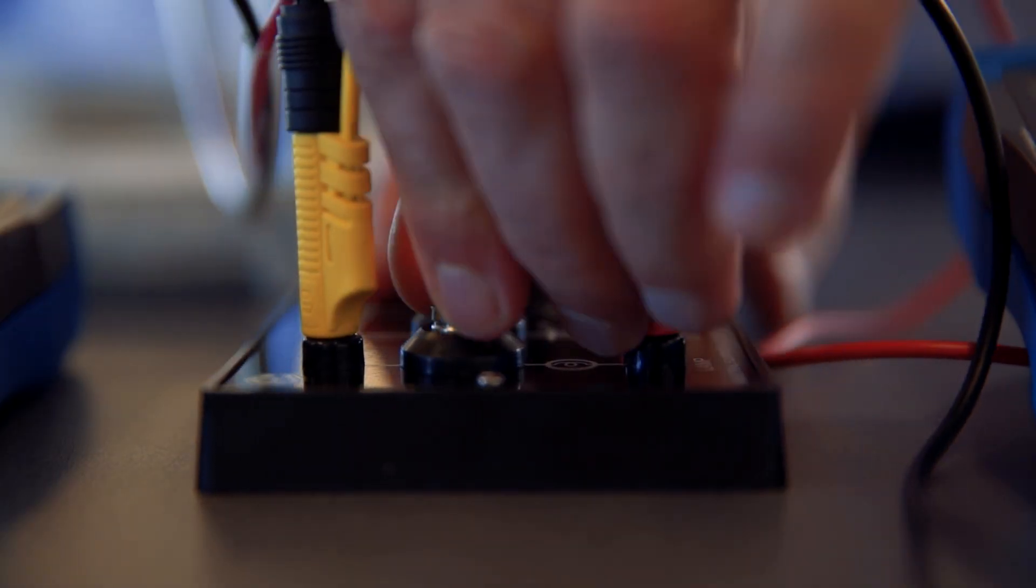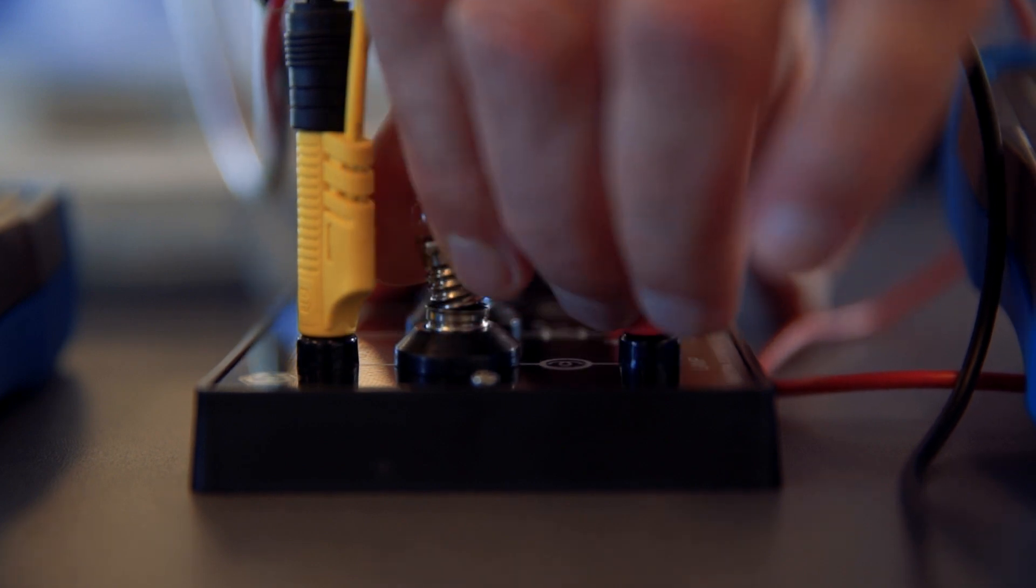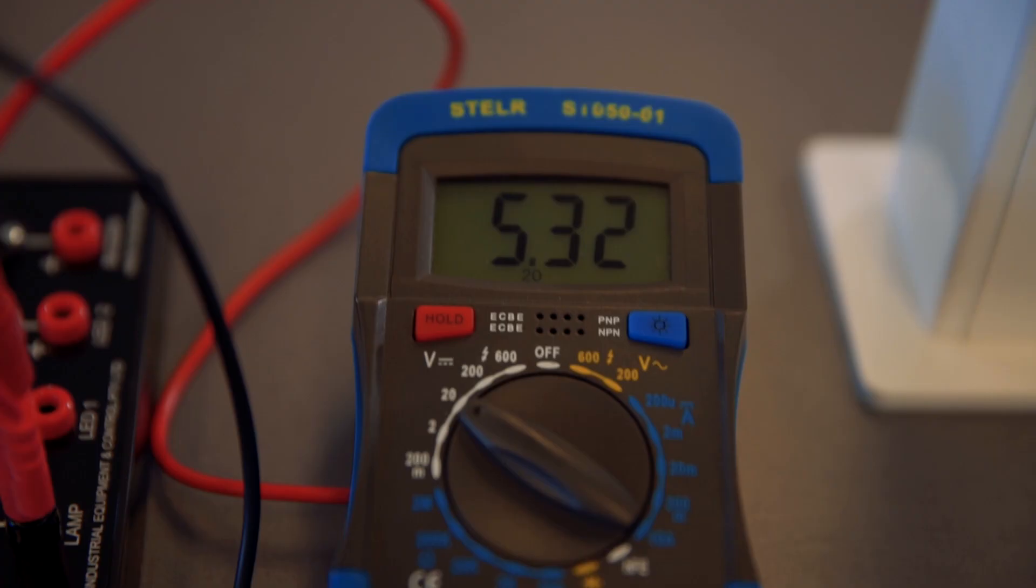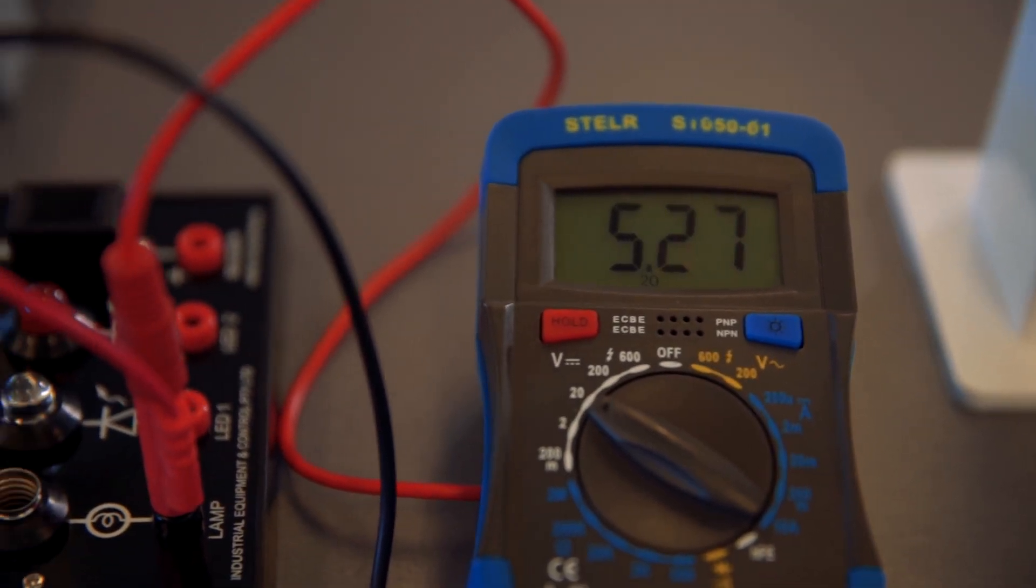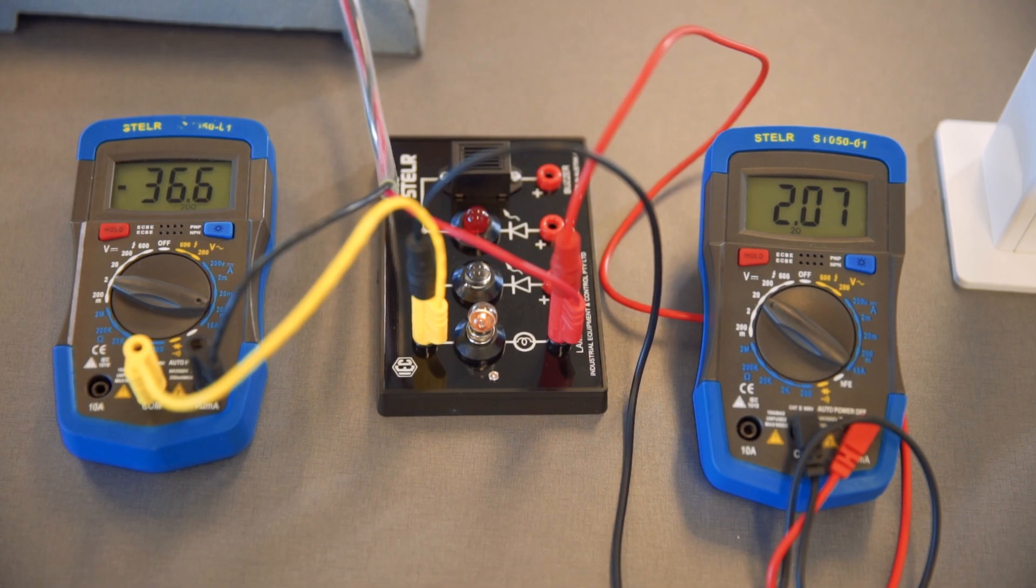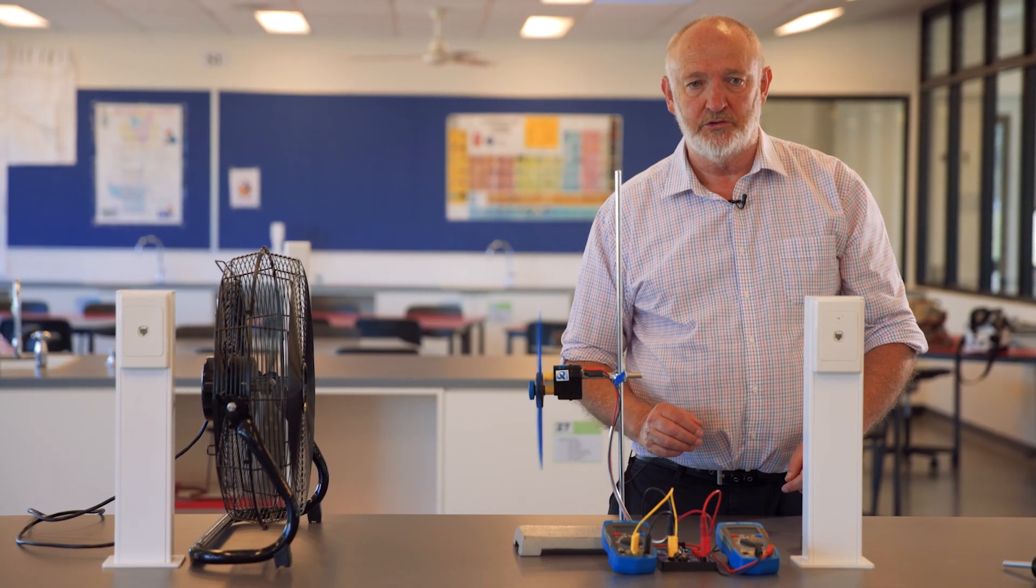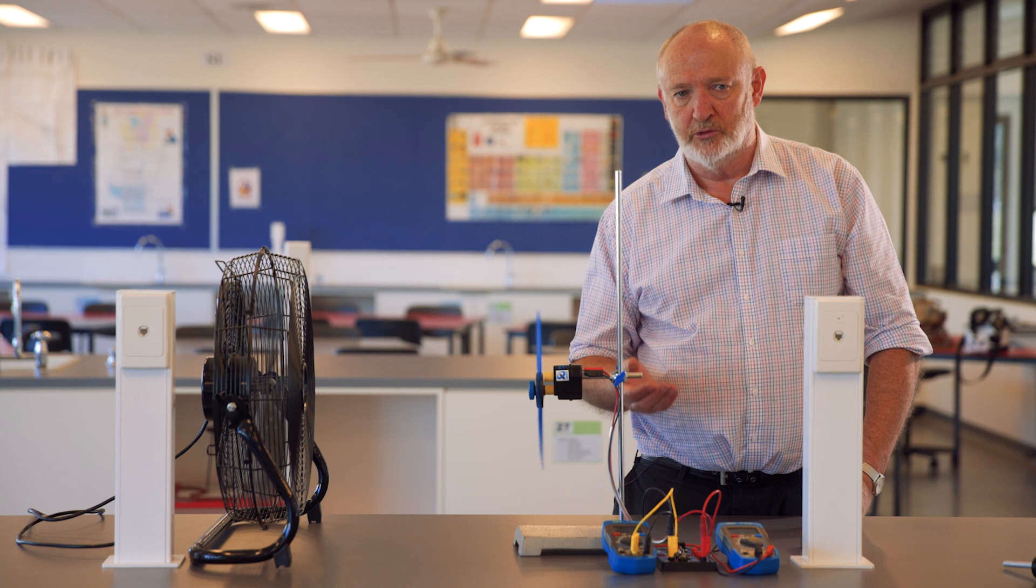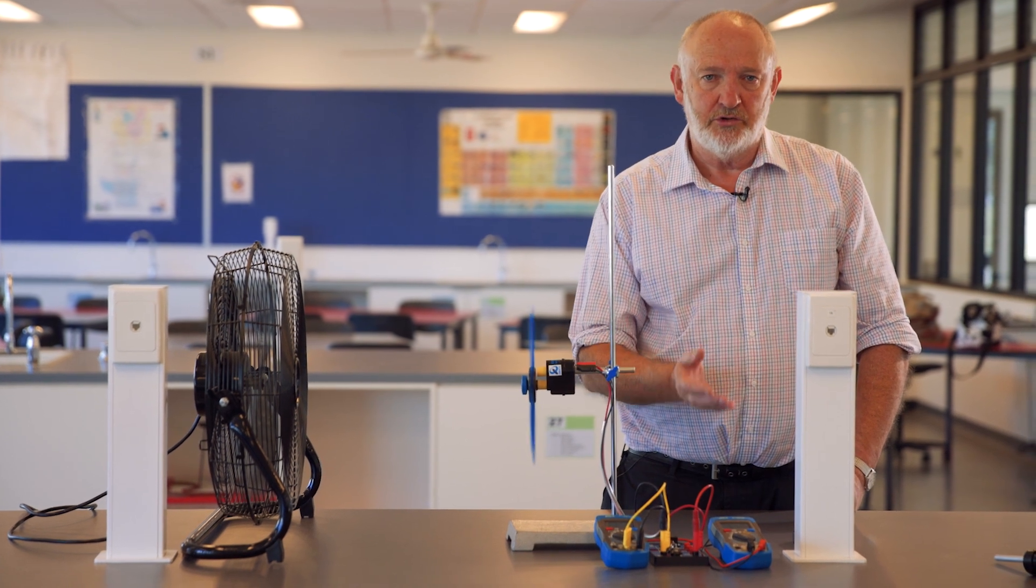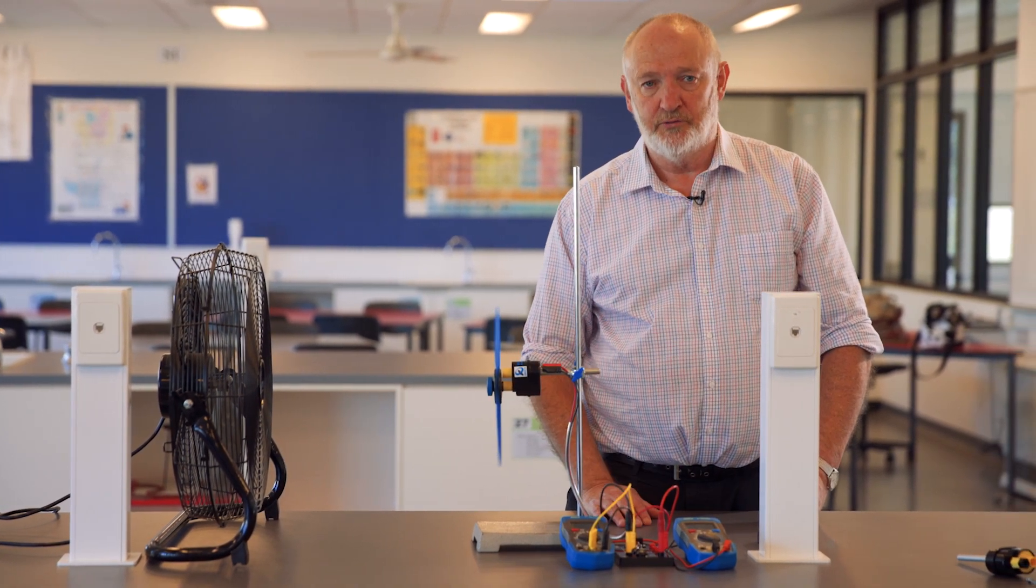Another thing we can look at here is that if we disconnect the light bulb, we see that the voltage has gone up to around 5.4 volts rather than the 2.2 volts we had before. So not having a load on the wind turbine will give you much higher voltages. But as soon as it starts to draw a current, the voltage going across the device falls away.